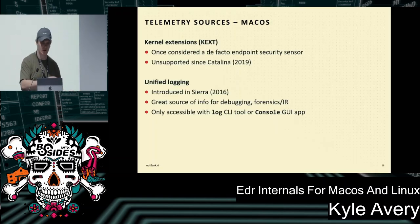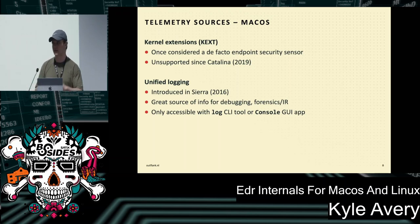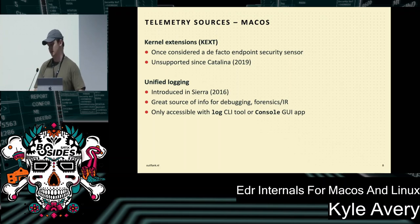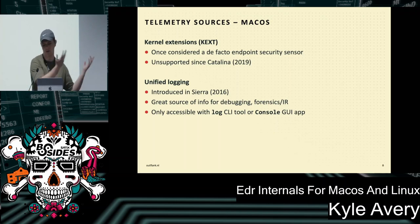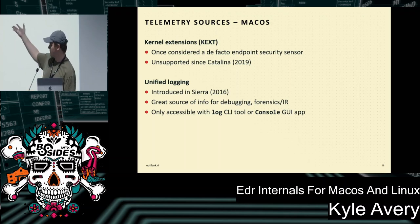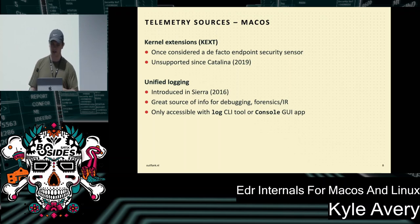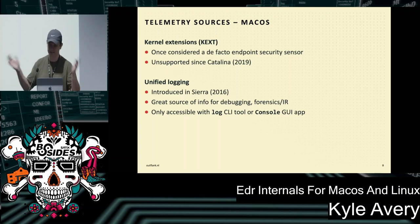Starting with macOS: if you Google 'macOS endpoint security' or 'macOS logging,' you'd likely find a couple of things that seem promising but won't actually be found in modern agents. You'll see kernel extensions — the equivalent of Linux kernel modules or Windows drivers, runtime-loaded kernel code. This used to be a standard way to collect the information you need, but in 2019 Apple decided you can no longer do this as a security vendor.